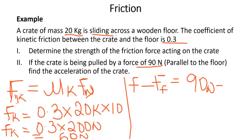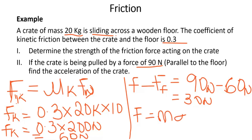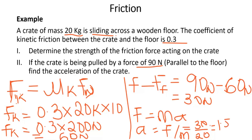We subtract the frictional force from the pulling force: 90 Newton minus 60 Newton equals 30 Newton net force. To find the acceleration of the crate, we use net force equals mass times acceleration. So a = F/m = 30/20 = 1.5 meters per second squared. So this is the acceleration of the crate.